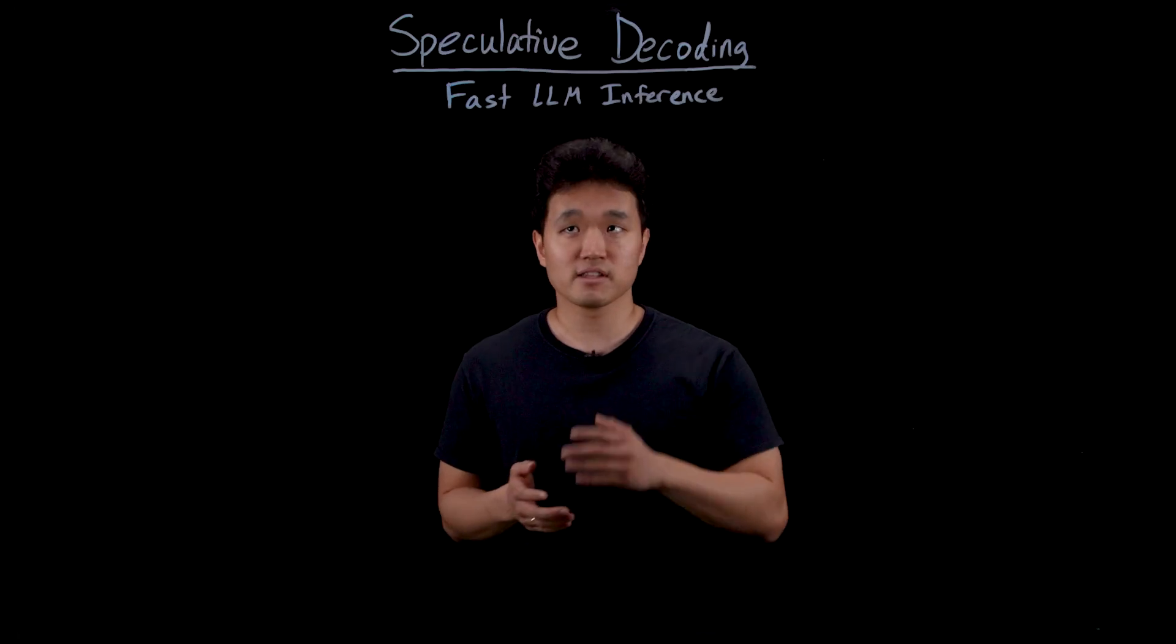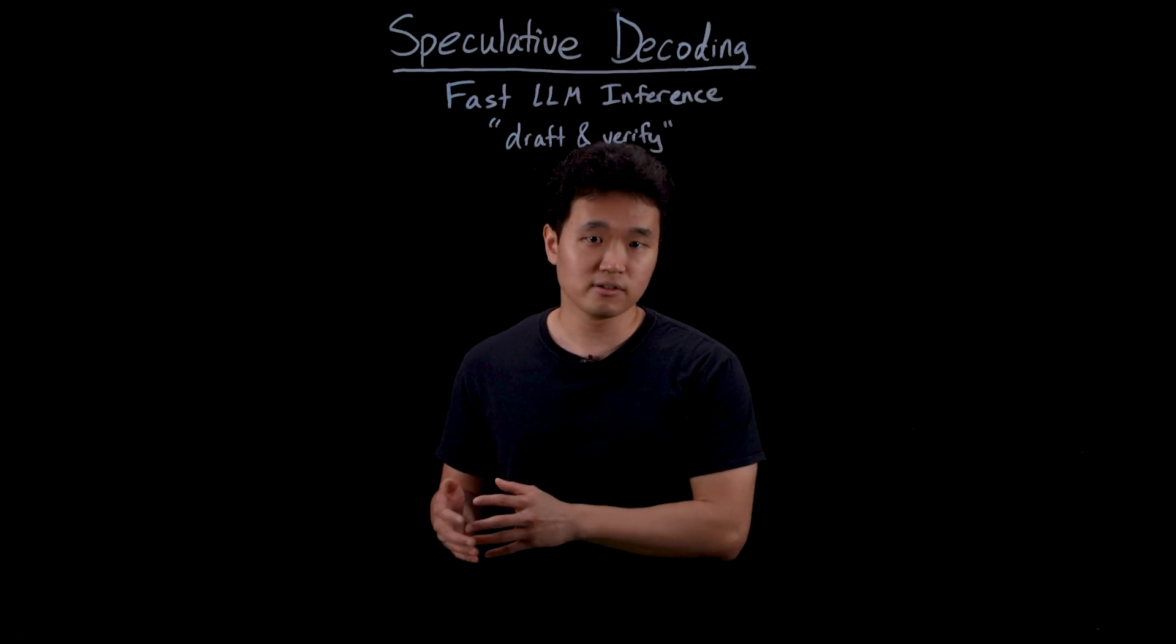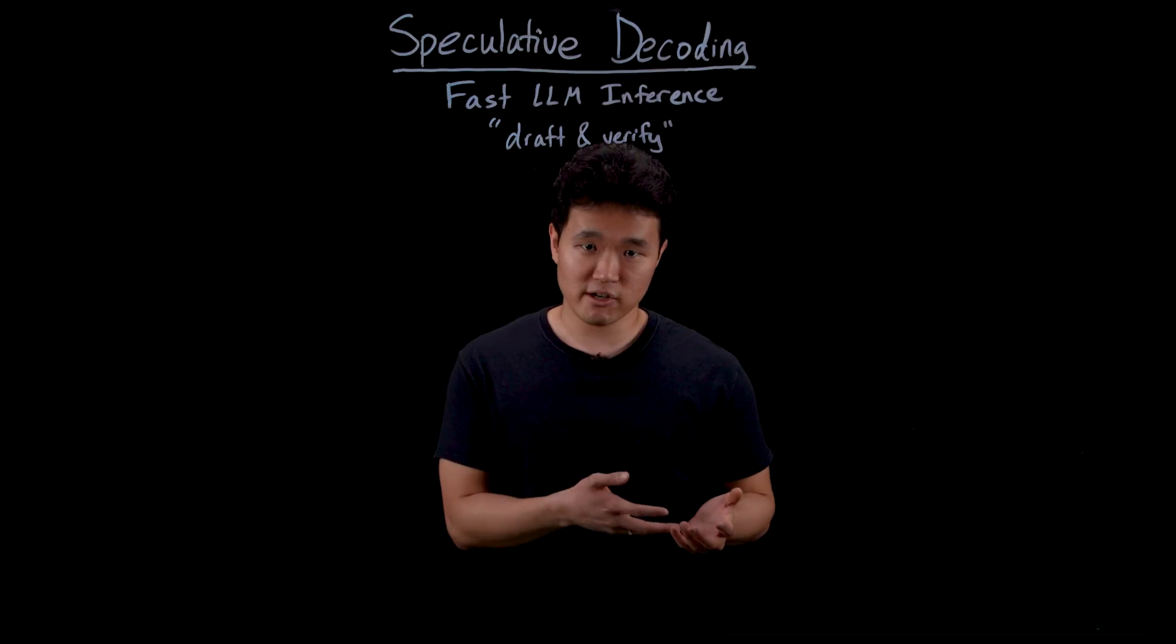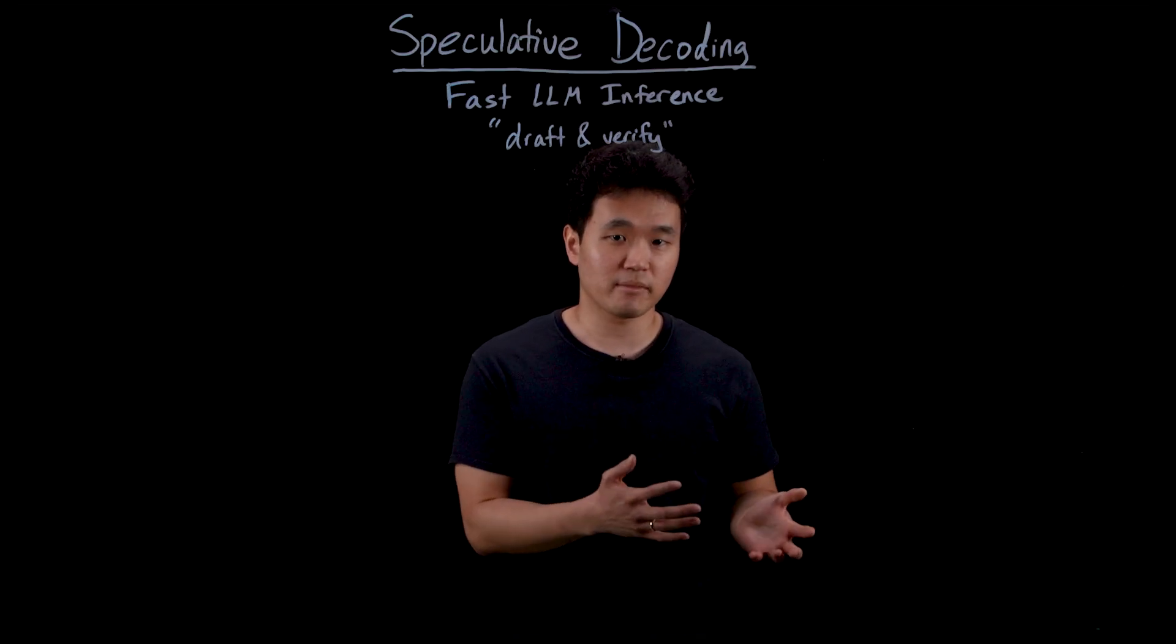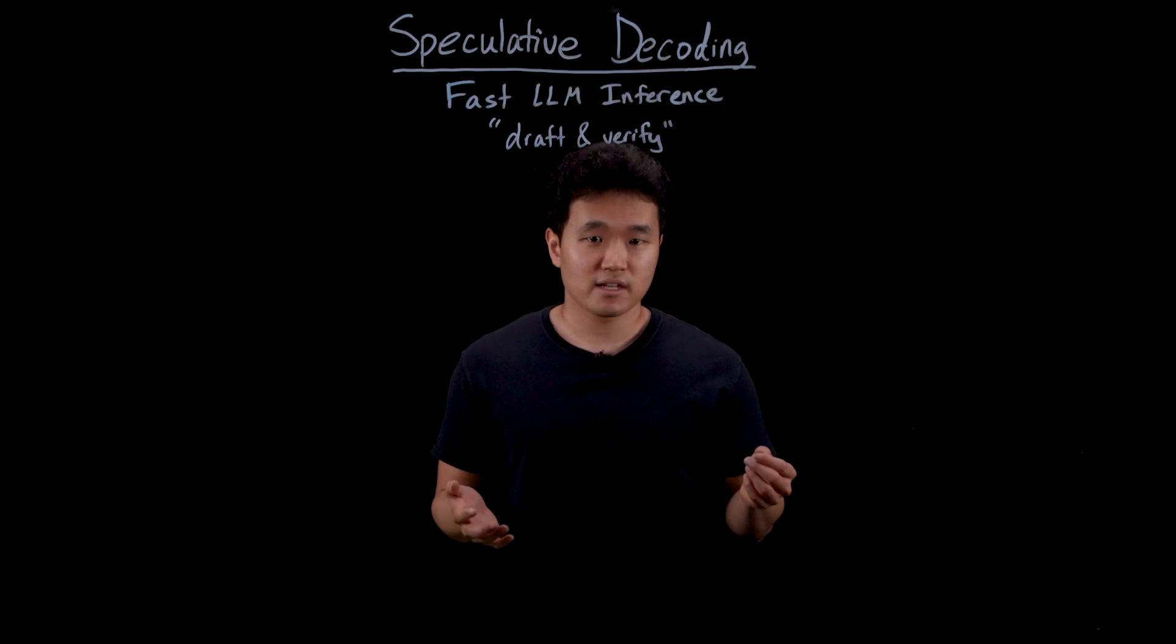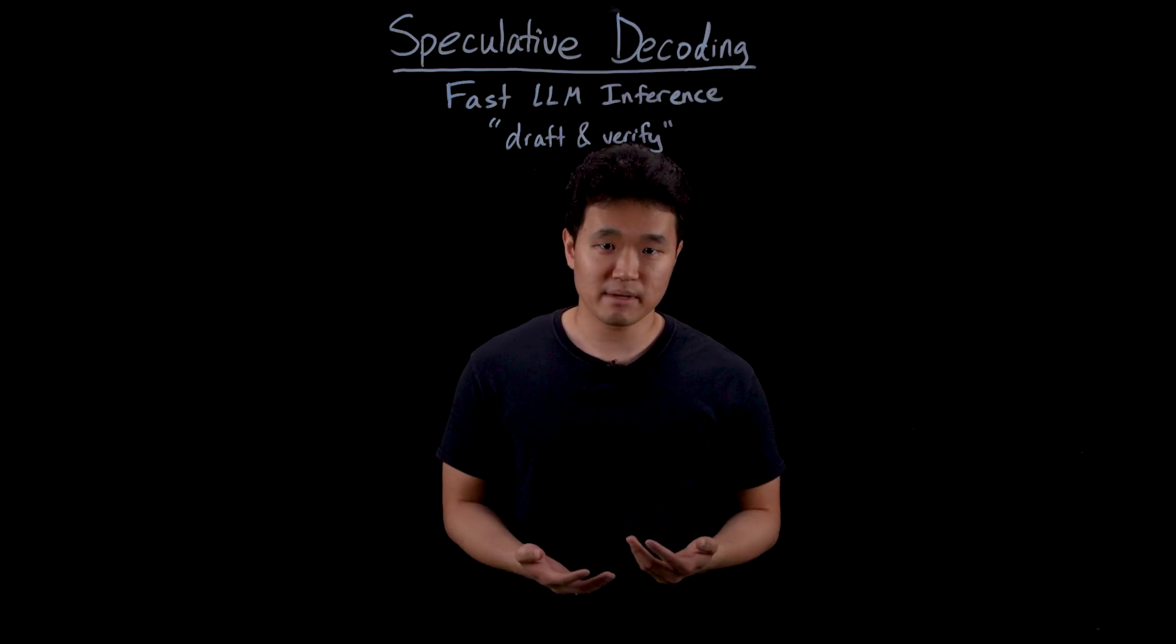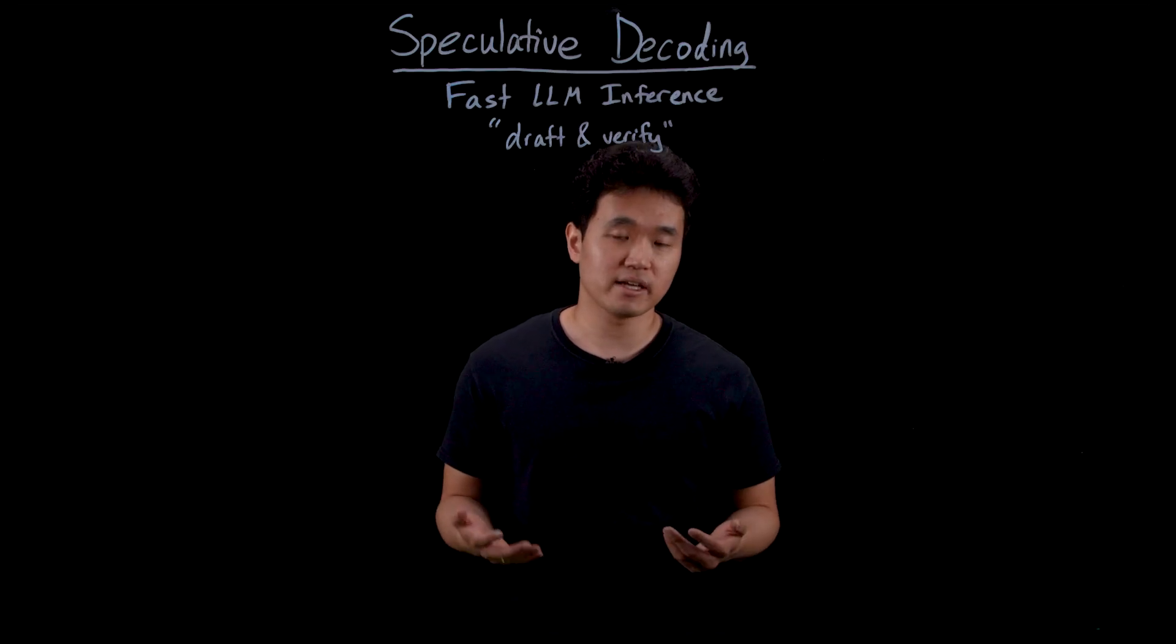This approach follows the slogan draft and verify by using a smaller draft model to speculate about future tokens while a larger target model verifies them in parallel. This approach can generate two to four tokens in the same amount of time it would take a normal LLM to generate just one.